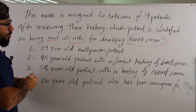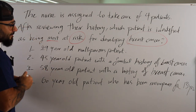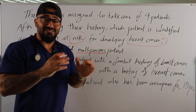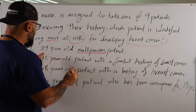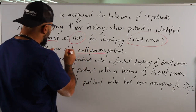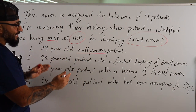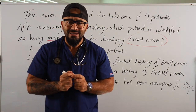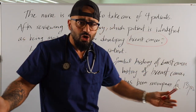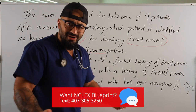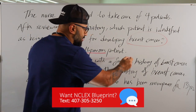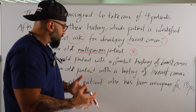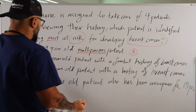Option number one: a 29-year-old nulliparous patient — someone who has never had kids before. Is that a risk for breast cancer? That's basically a normal human being. That patient is not at risk for breast cancer.